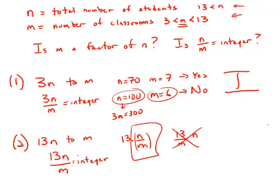So because m is between three and thirteen, there's no way for 13 over m to be an integer. That means that it has to be true that n over m is an integer. And so this statement does give us enough information to determine that we can give a yes answer to the question, and so this statement is sufficient.